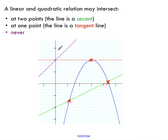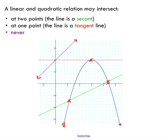It is also possible for a line to never touch the quadratic at all. You can imagine both going on forever in both directions with no intersection. So what we're going to do in this video is look at these three cases and show how to actually determine the points of intersection for the system.